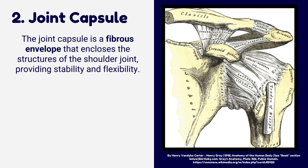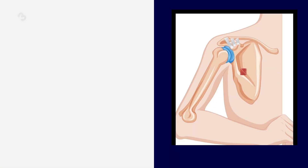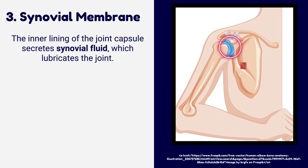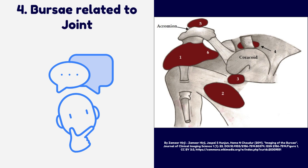The joint capsule of the shoulder joint is a fibrous envelope that encloses the structures of the shoulder joint, providing stability and flexibility. The synovial membrane is the inner lining of the joint capsule and secretes synovial fluid, which lubricates the joint.